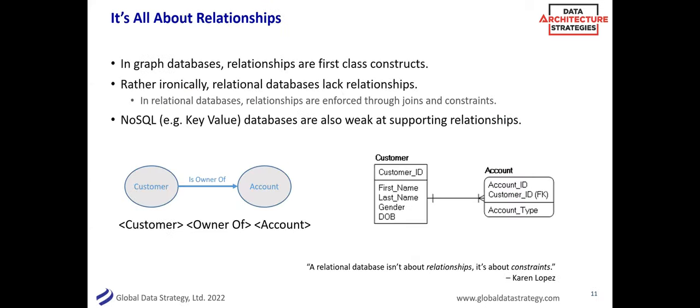In a graph database, it's all about relationships and first-order constraints — that's your semantic layer. Karen Lopez makes a great point: a relational database isn't really about relationships, it's about constraints — keys that link a customer to an account. But in a graph database, a customer is the owner of an account — those verb phrases are what it's all about. Mary is the sister of John, Mary is the boss of John, Mary is the enemy of John. All of those relationships are key to linking graph databases together, and that's what makes the graph so powerful.